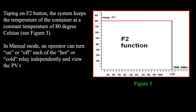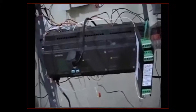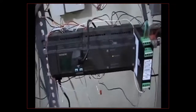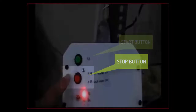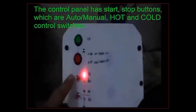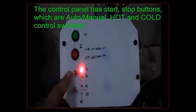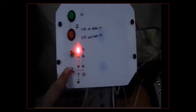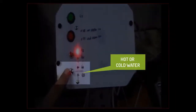In manual mode, an operator can turn on or off each of the hot or cold relays independently and view the PV temperature value on the HMI device. This temperature controller, built around a Siemens LOGO PLC, has a panel from which we can start or stop the system and also change the status to auto or manual mode.